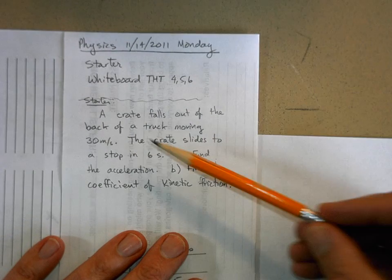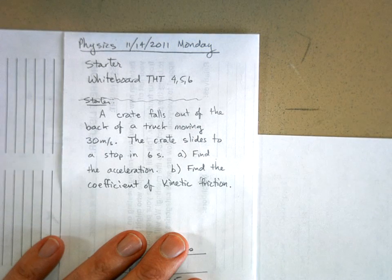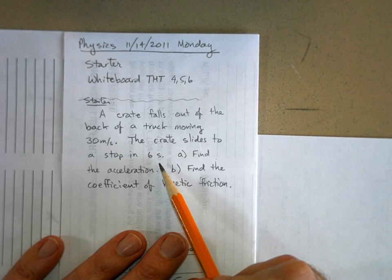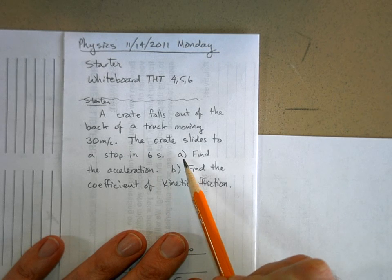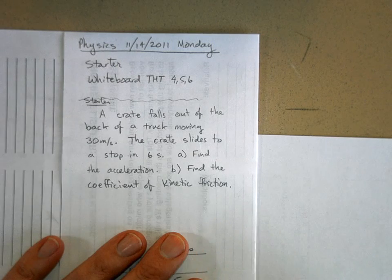Okay, so the starter today is a crate falls out of the back of a truck moving 30 meters per second. The crate slides to a stop in six seconds.